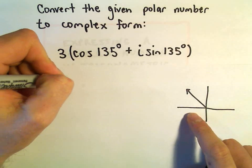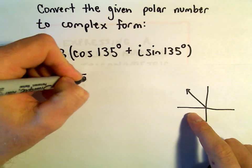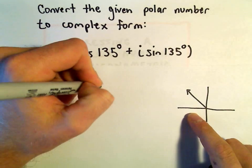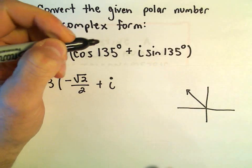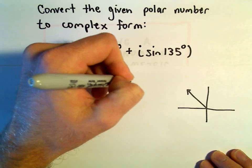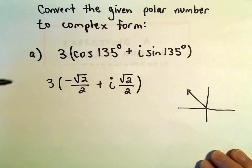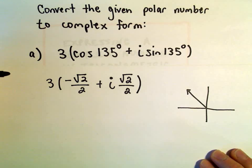Cosine of 135 degrees is negative square root of 2 over 2. Sine of 135 degrees is positive square root of 2 over 2. So now all we have to do is just distribute out the 3,